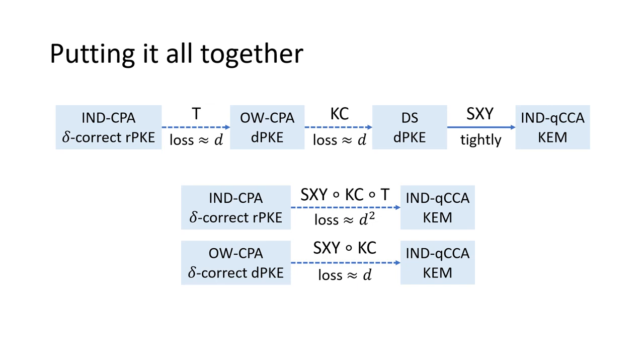The combined transformation SXY and KC can turn any one-way CPA-secure direct-correct DPKE into a QCCA-secure KEM with loss about D.